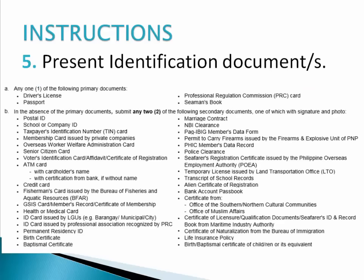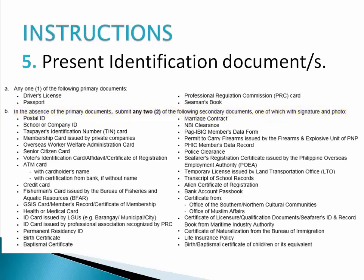Then you have to present identification documents. Any one of the following primary documents such as driver's license, passport, PRC card, and seaman's book. If you don't have any of the primary documents, then you have to submit any two of the following secondary documents, one of which with signature and photo. Just check through the list and I'll also give you a link at the description box below.